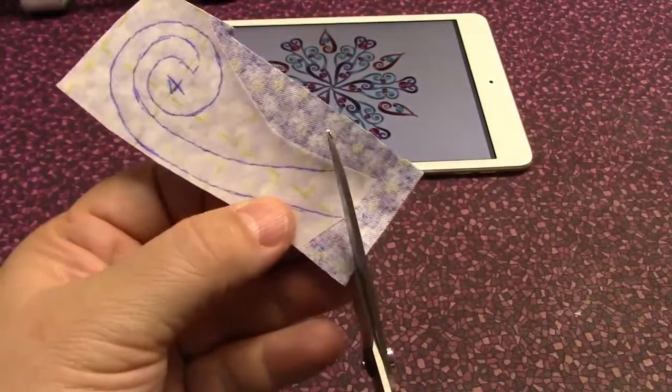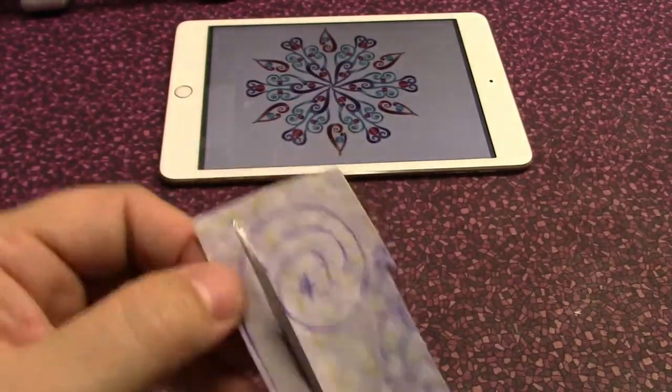You can now cut all the appliques. Then I will show you my trick to place them on the background fabric.